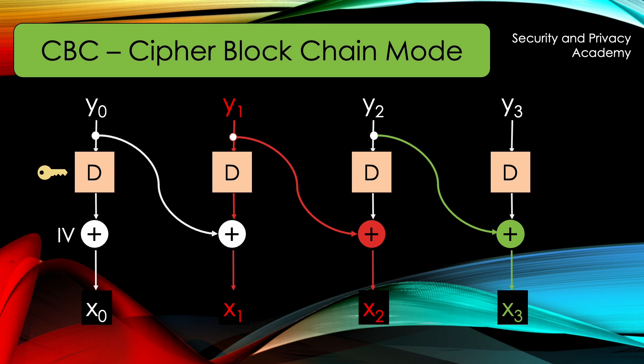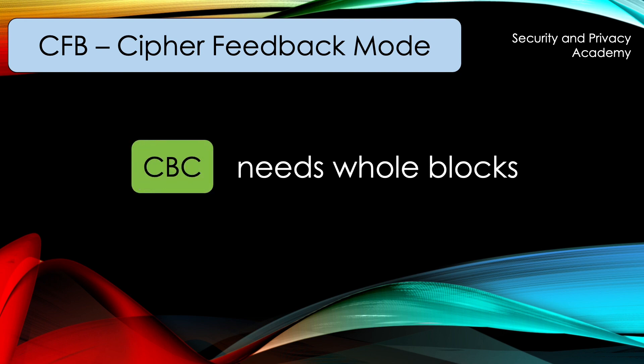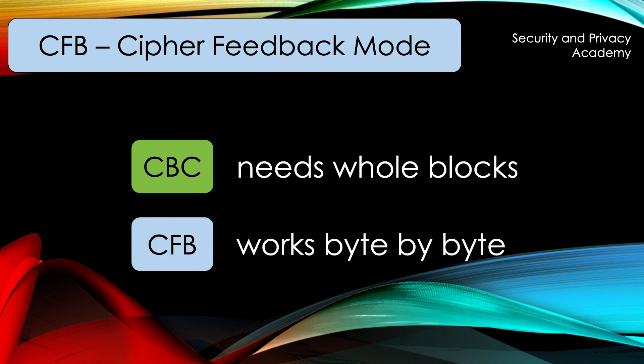Let's move on to CFB, the cipher feedback mode. We have seen in CBC that operations occur block by block, so whole blocks are needed to decrypt and encrypt. That means a decryption can only start if a full block has arrived. If a different approach is necessary, then CFB can be used, since it works byte by byte and doesn't have to wait for whole blocks. In that way, it works a little bit like a stream cipher, although those work bit by bit.